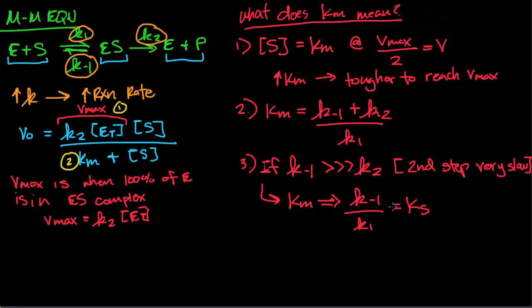And what this means is if you have a low Km, that means a high affinity. So if you have a low Km, that means a high affinity of enzyme for substrate. You raise the affinity of E for substrate.